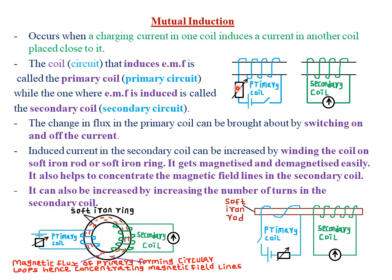The primary coil also has a rheostat to regulate the amount of voltage or current flowing through that circuit. While the coil or circuit where EMF is induced is called the secondary coil or the secondary circuit. In the secondary circuit, we have the galvanometer to deflect so as to indicate the presence of current which is being induced. The primary coil will always have the source of power, and the secondary coil will always have an instrument to detect or show the presence of the induced current.